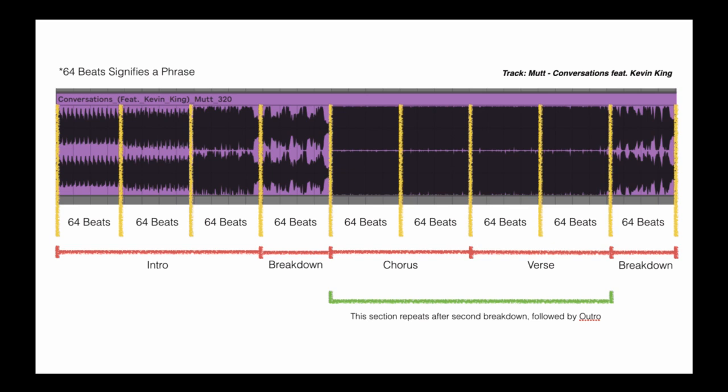Usually after the breakdown, as represented by the green line, there's a pretty similar structure — followed by the chorus, verse, and then maybe an outro, similar in structure to the intro. So that's how drum and bass tracks are structured. Now I'm going to talk about cue points and how we can go about mixing and navigating through tracks in Rekordbox. Here we have two tracks loaded.